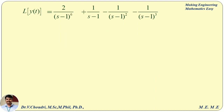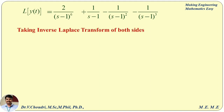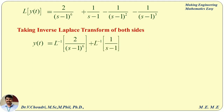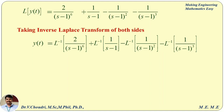Without using partial fractions or any other method, we split it into the correct form by simplification. This is the final form. Now taking the inverse Laplace transformation on both sides: y(t) = L⁻¹{2/(s−1)⁶} + L⁻¹{1/(s−1)} − L⁻¹{1/(s−1)²} − L⁻¹{1/(s−1)³}, by the linearity property.